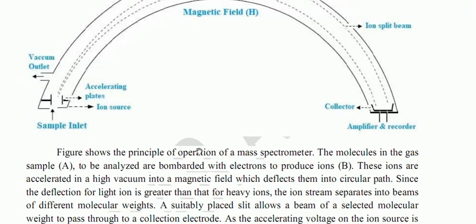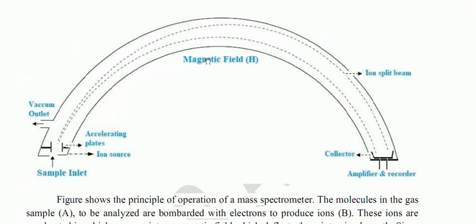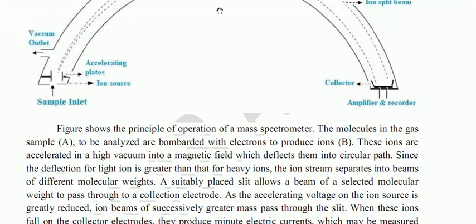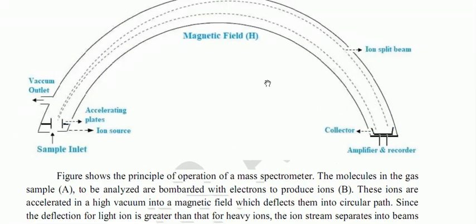These ions are accelerated under high vacuum into the magnetic field, which deflects them into circular paths. Since the deflection for light ions is greater than for heavy ions, the ions separate into beams of different molecular weights.